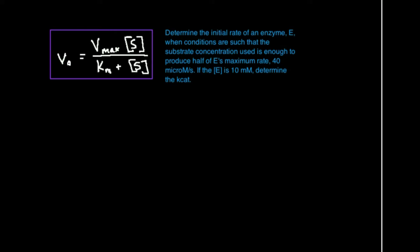One thing that should really jump out at you when you see a problem like this is that in this equation we have basically four things: initial rate, Vmax, substrate concentration, and Km. The first thing is that we're trying to find the initial rate and we know the Vmax, but we have two other unknowns — we don't know the substrate concentration, they don't give it to us explicitly, and we don't know the Km either.